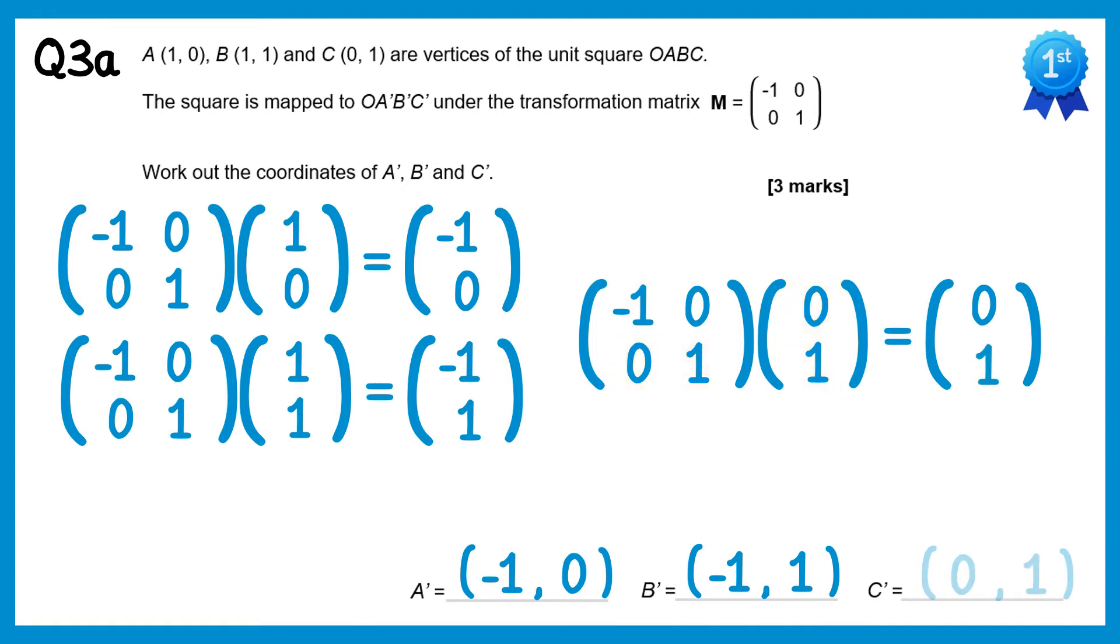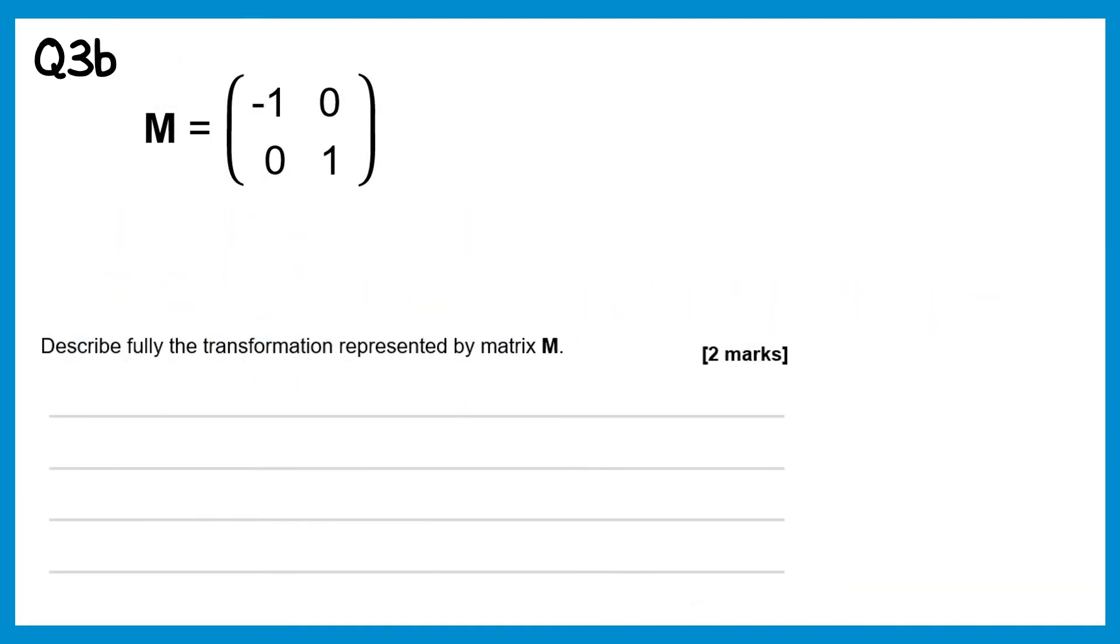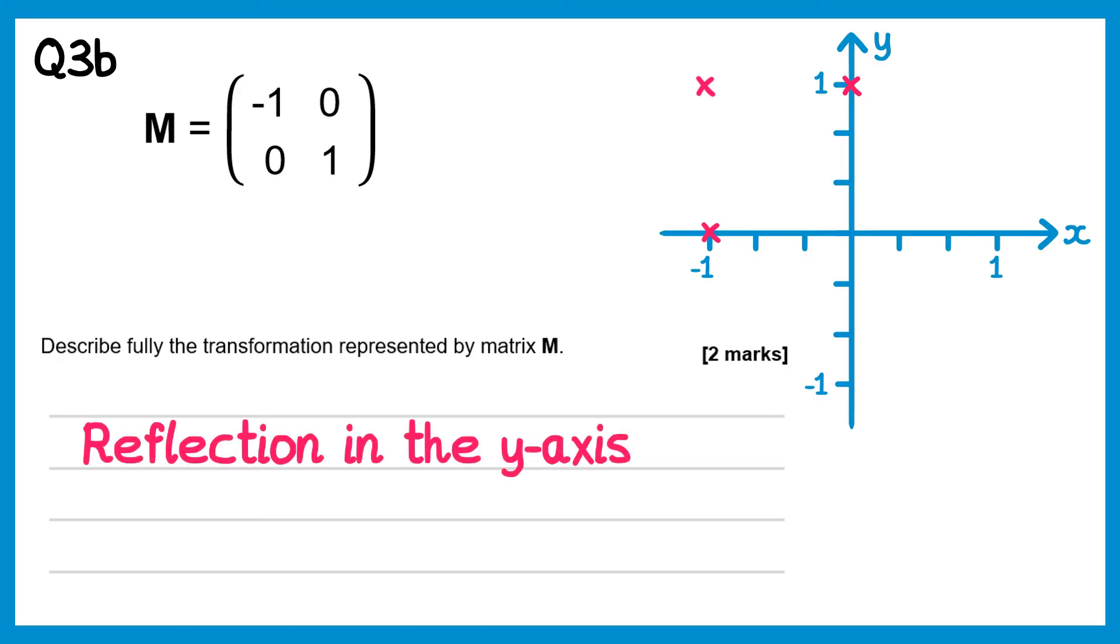So now we have all of the points: A' is (-1,0), B' is (-1,1), and C' is (0,1). For part B of this question, we need to describe the transformation. If we draw a quick sketch, we can see what happened to the points from the previous part. The point (1,0) transformed to (-1,0), the point (1,1) transformed to (-1,1), and the point (0,1) stayed where it was. So this is a reflection in the y-axis, or you could say the line x equals 0.